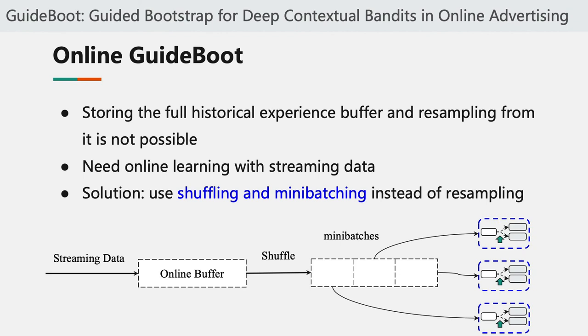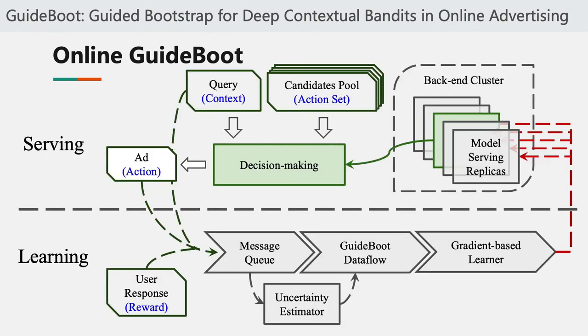As shown in this figure, streaming data comes in, and we store a large batch of streaming data as an online buffer. We then shuffle the online buffer into mini-batches, and for each batch, we use the guidance function to provide the fake samples. Finally, we use the shuffled mini-batches of real samples and fake samples to train the different models.